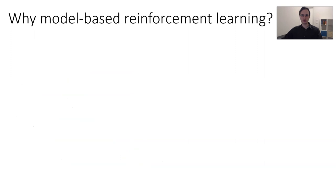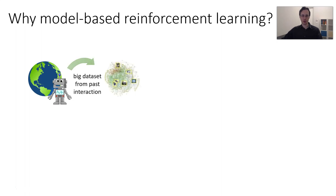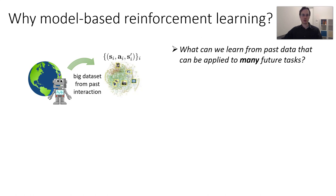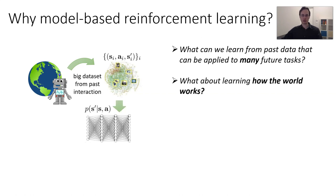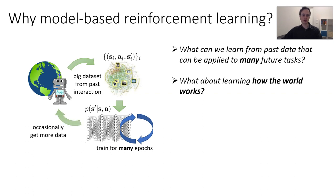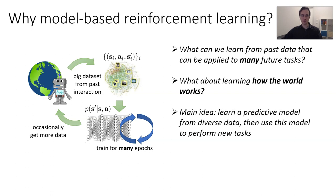One very effective way to imagine this working out is in the setting of model-based reinforcement learning. In model-based reinforcement learning, you have an agent that collects a data set of interaction from its past experience, which consists of states, actions, and next-state tuples. We ask: what can we learn from past data that can be applied to many future tasks? We can use this data to learn a predictive model that predicts the next thing the agent will observe given its current state and action, train this model for many epochs on diverse data sets, and occasionally get more data if necessary. This powerful model will allow us to perform a wide variety of tasks insofar as it can effectively predict real-world interactions. So the main idea is to learn a predictive model from diverse data and use this model to perform new tasks.